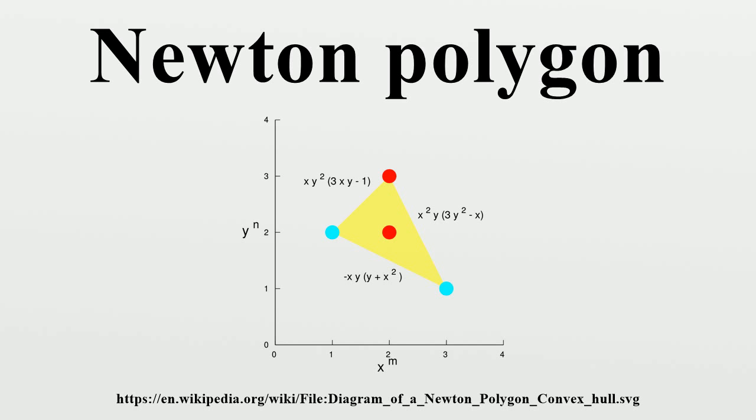Let λ_i be the slopes of the line segments of the Newton polygon arranged in increasing order, and let ℓ_i be the corresponding lengths of the line segments projected onto the x-axis. Then for each i, P has exactly ℓ_i roots with valuation λ_i.